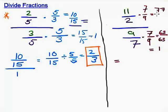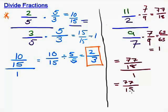we have 11 times 7 is 77, and 2 times 9 is 18. So that gives us 77 eighteenths over 1. And since it's over 1, that's equal to 77 eighteenths.